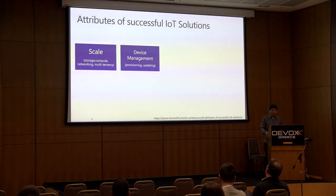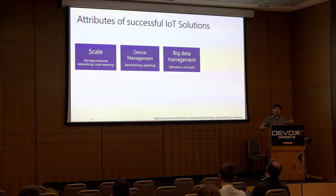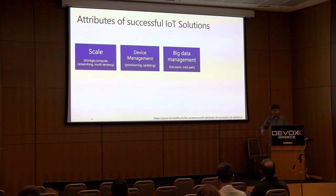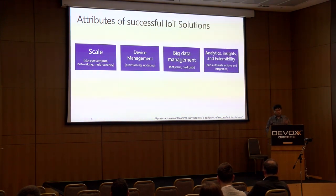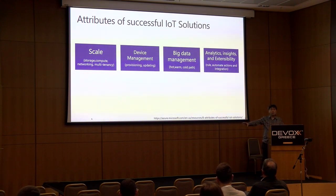Device management is important — you have to provision each device, give them their own cloud connection, and be able to update the software running on the device. You also have to think about big data management — data coming in from sensors has a hot path for real-time analytics, a warm path, and a cold path where you dump it in storage and eventually build reports. Then there's analytics, insights, extensibility, and rules — building alerts if a device is acting up and automating those actions.